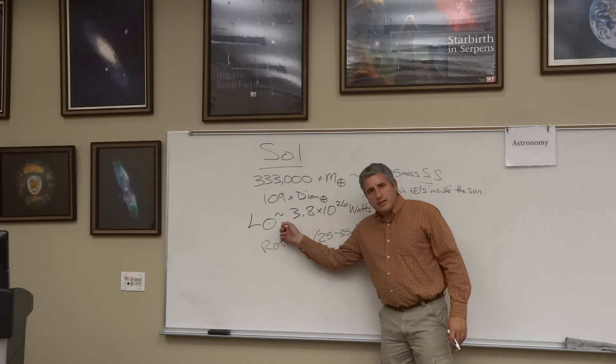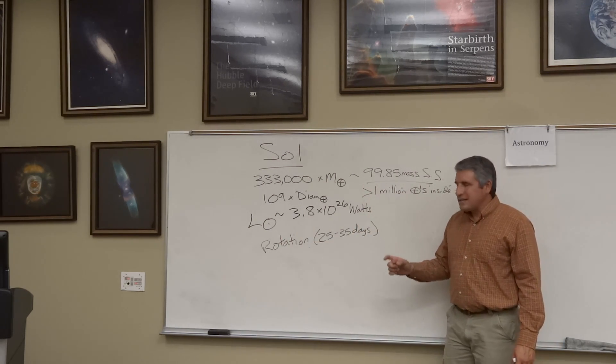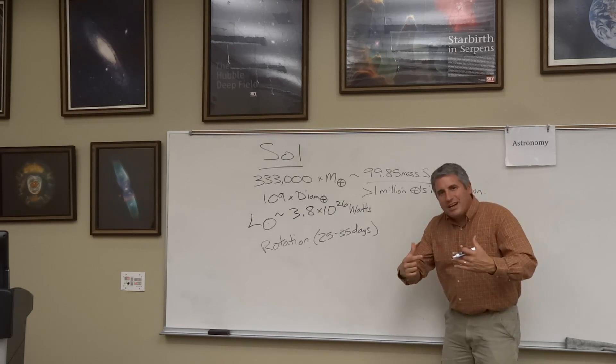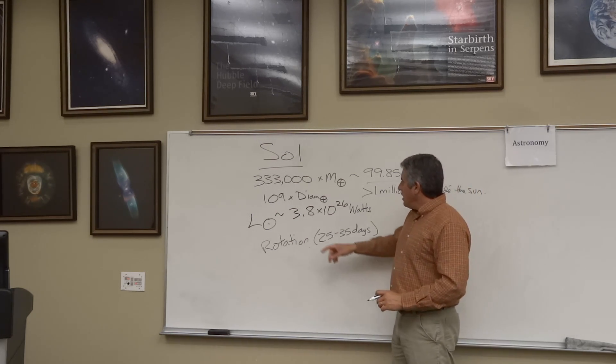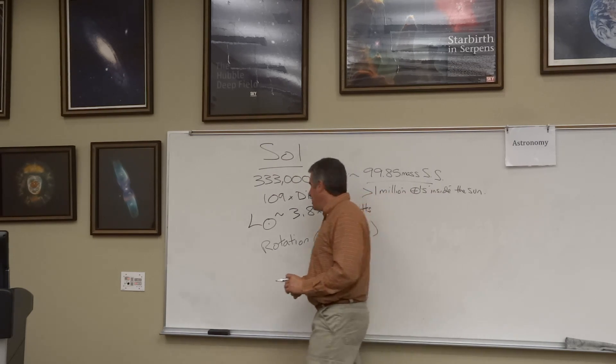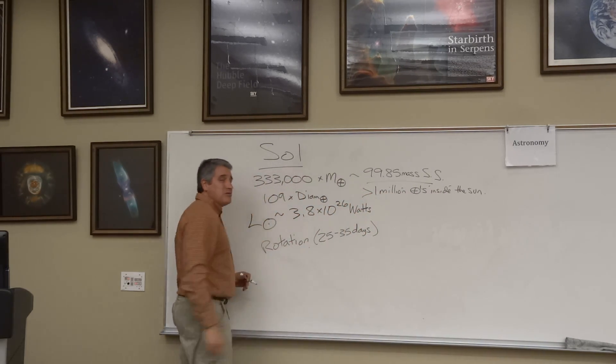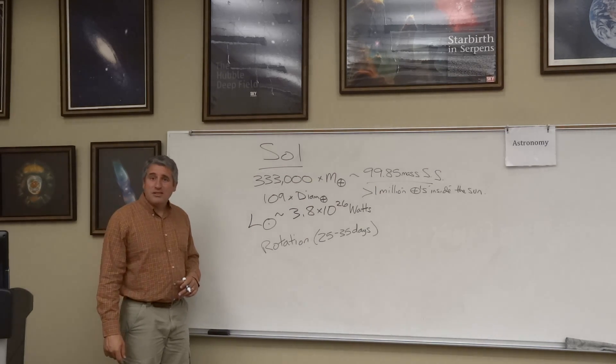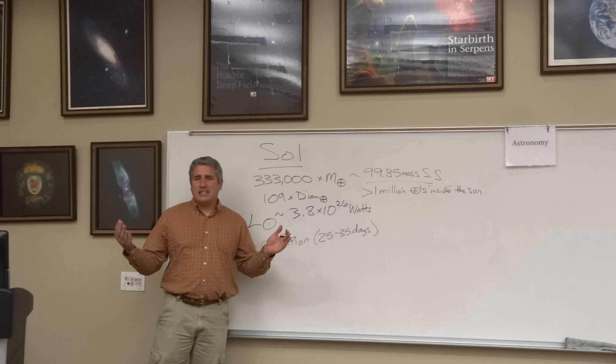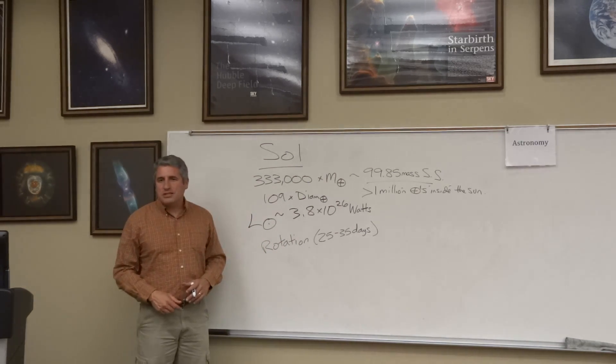And here's something we didn't see with the planets. Luminosity. The Sun has a luminosity, a brightness, an energy that it emits of 3.8 times 10 to the 26th watts. That's a lot of numbers. These are the same watts that we use in a light bulb. There is more power that comes off the Sun in a second than the Earth could use in a thousand years.